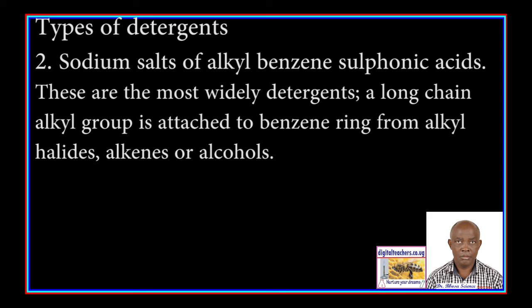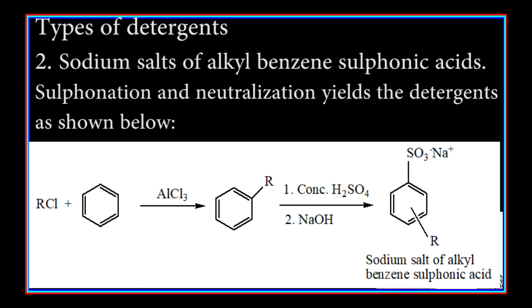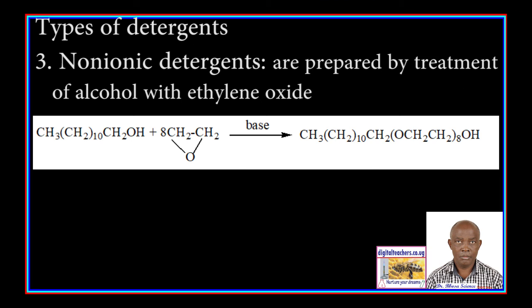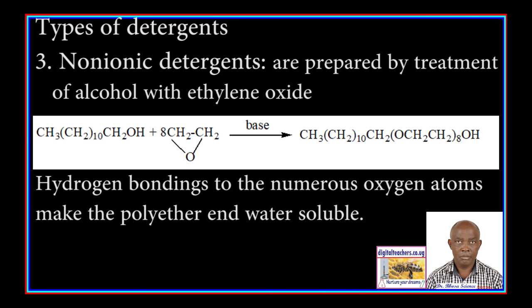2. Sodium salts of benzene sulfonic acid. These are the most widely used detergents. A long-chain alkyl group is attached to a benzene ring from alkyl halide, alkenes, or alcohol. Sulfonation and neutralization yields detergents, as shown below. 3. Nonionic detergents are prepared by treatment of alcohol with ethylene oxide, as shown below. Hydrogen bonding to the numerous oxygen atoms makes the polyester water soluble.